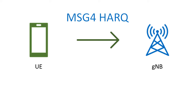Next is the RRC Setup Complete plus the NAS Registration Request. At this point, the RACH process is complete and the initial attach is complete. In non-standalone mode, you can have two options — not only the contention-based method, but also the contention-free method. Because in non-standalone, you initially attach with LTE, so you may not need a contention-based random access.